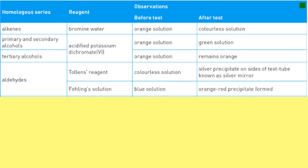Moving on to aldehydes. If you've got an aldehyde, you can use either Tollens or Fehlings. Tollens involves a complex including silver 1+ ions. They turn into silver atoms in that reaction, which coat the walls of the test tube, giving you a mirror effect. If that happens, you know you've got an aldehyde. If it doesn't happen, it could be a ketone.